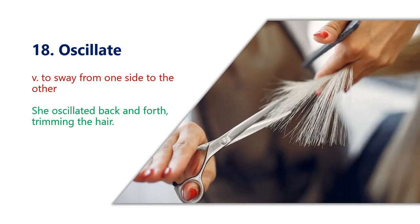The eighth word is oscillate, which means to sway from one side to the other, or being indecisive about something. For example: she oscillated back and forth about trimming her hair, meaning she was unable to decide whether she should trim her hair or not.